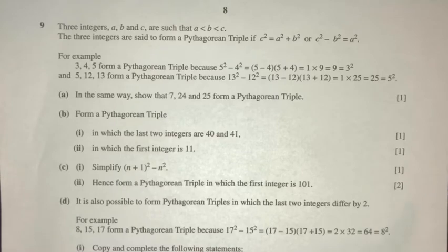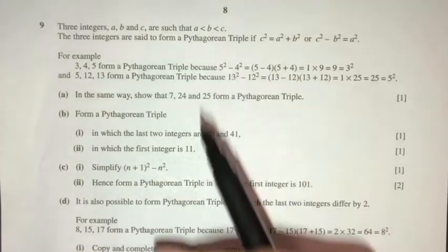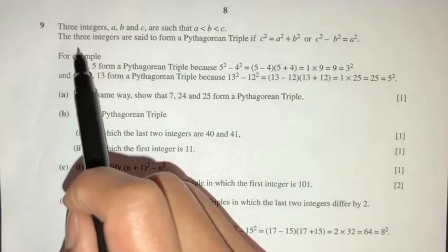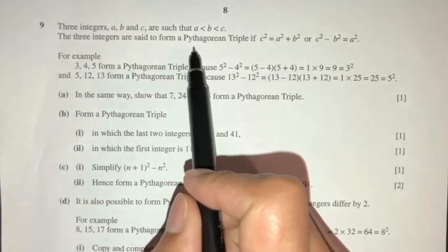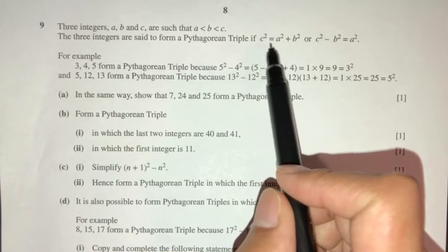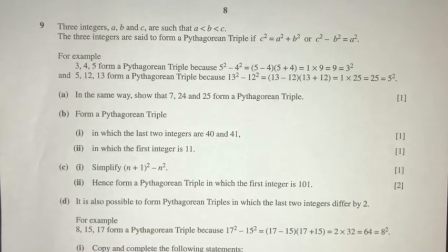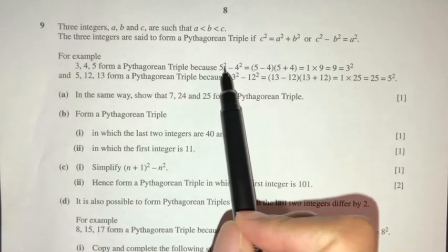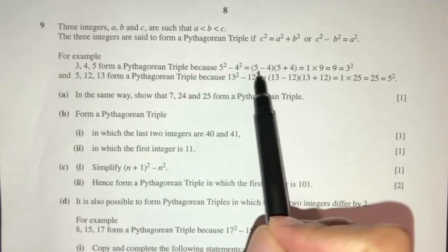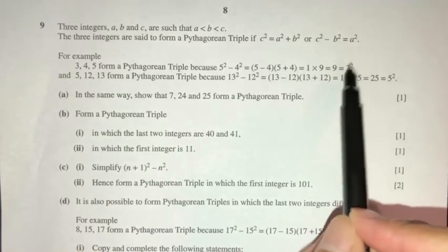Three integers A, B, and C are such that A is less than B, and B is less than C. The three integers form a Pythagorean triple if C squared equals A squared plus B squared. As an example, take numbers 3, 4, 5: 5 squared minus 4 squared equals 3 squared. Same concept applies here.